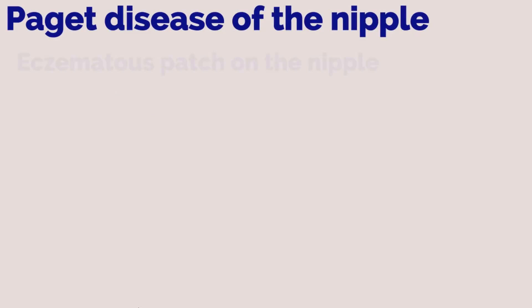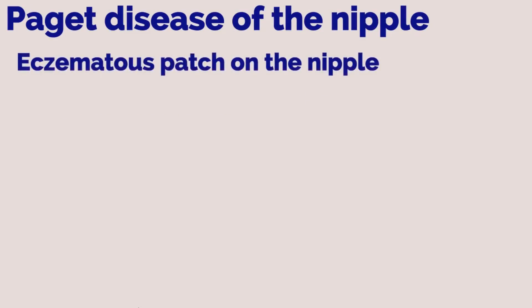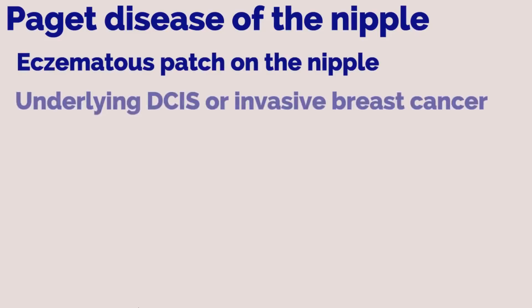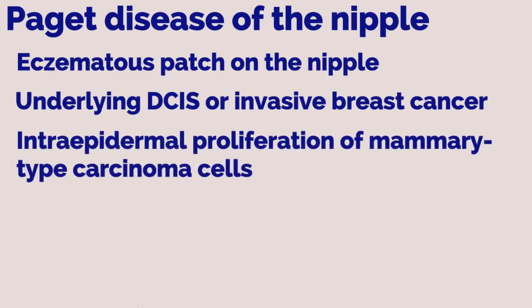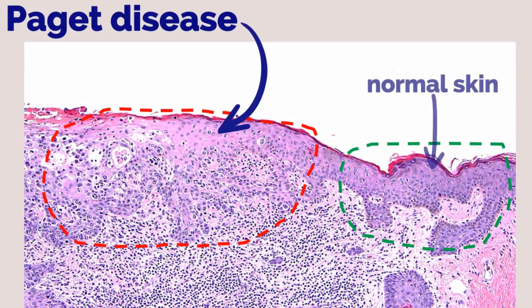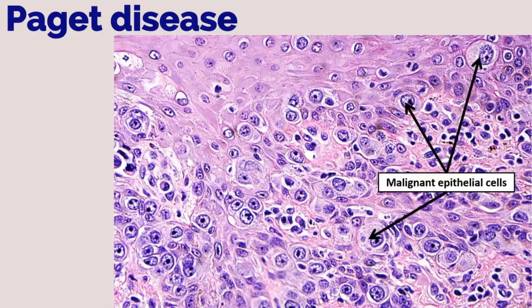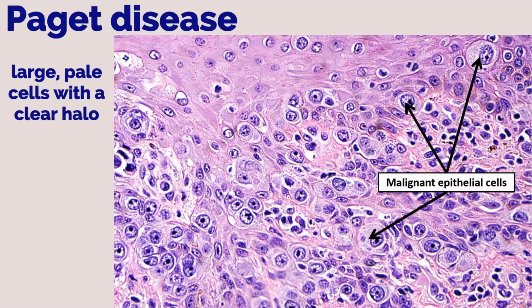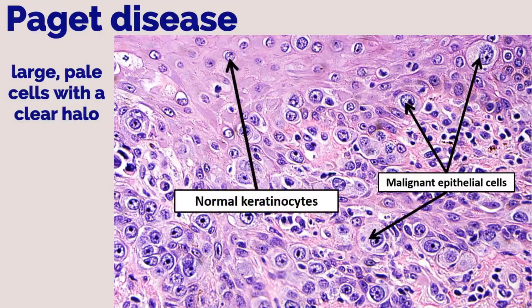Less common breast cancer types include inflammatory breast cancer and Paget disease of the nipple. Paget disease of the nipple presents as an eczematous patch on the nipple and is usually associated with underlying DCIS or invasive breast cancer. There is intraepidermal proliferation of mammary-type carcinoma cells. On higher power, these cells appear large and pale with a clear halo, appearing differently than normal keratinocytes.